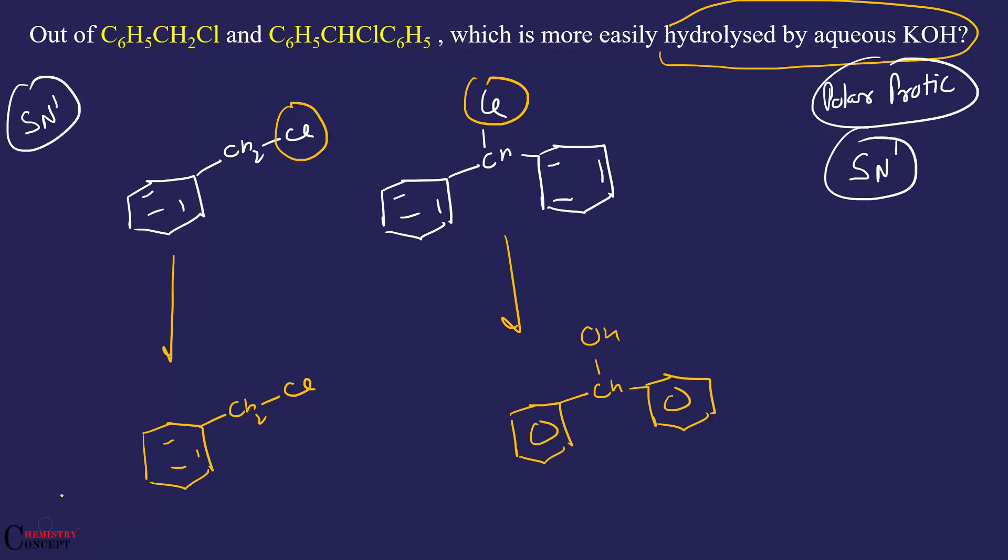In SN1 mechanism, a carbocation is formed. The more stable the carbocation, the more reactive the compound. In the first one, the carbocation is this, and in the second one, the carbocation is this.